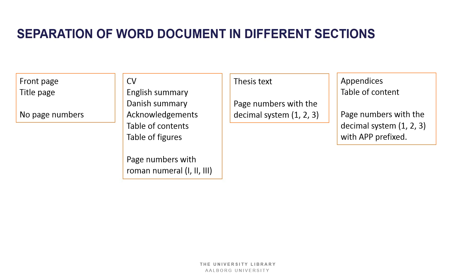In the first section you have the front page and title page, and these pages have no page numbers. Then there is a section where you have your CV, the English summary, the Danish summary, the acknowledgement, table of contents, and table of figures. These pages have page numbers with Roman numerals.